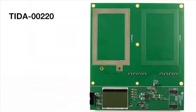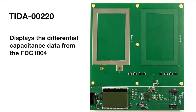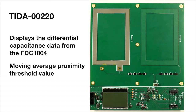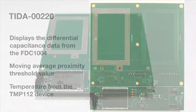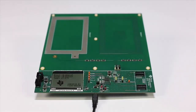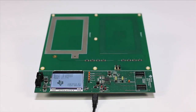The reference design is programmed to display the differential capacitance data from the FDC1004, the moving average proximity threshold value, and the temperature from the TMP112 device. The firmware uses averaging to compare the FDC1004 data output against the slow moving average. As you can see, the LCD backlight turns on as my hand approaches the capacitive sensor.